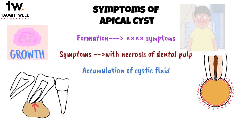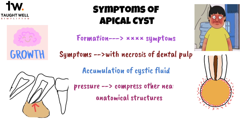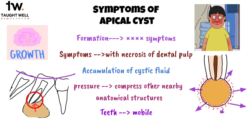Pain can become apparent in the later stages when this pressure starts to compress other nearby anatomical structures. In such situations, the root apices of the involved teeth move apart, causing the crowns to be forced out of alignment, and the affected teeth may become mobile. If left untreated, a cyst has the potential to continue growing at the expense of the underlying maxilla or mandible.